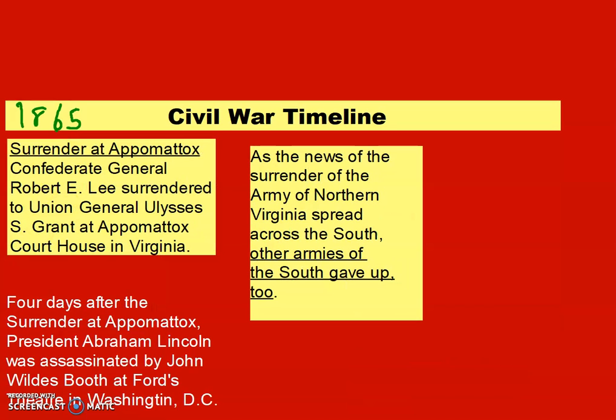Then in 1865 was the surrender at Appomattox, where Confederate General Robert E. Lee surrendered to Union General Ulysses S. Grant at the Appomattox Courthouse — that's a town in Virginia. They signed the document not in a courthouse but in a farmhouse, though the city is called Appomattox Courthouse.